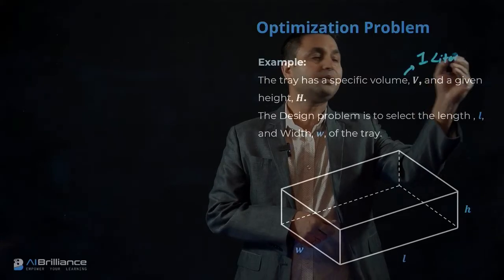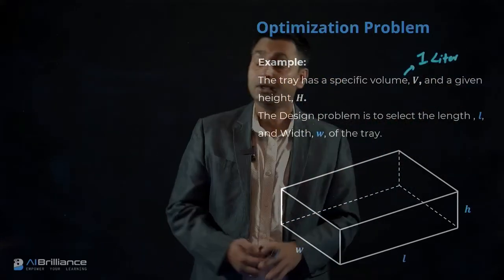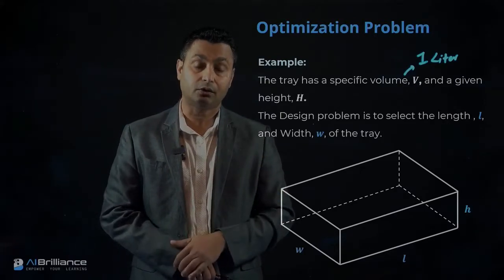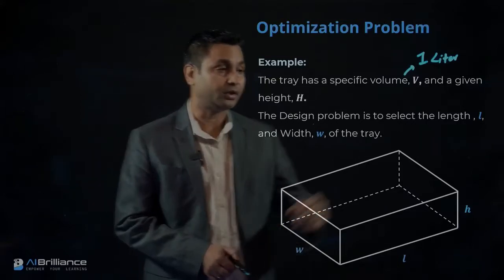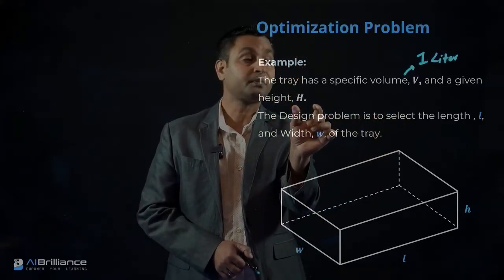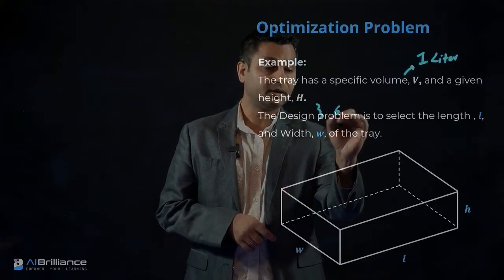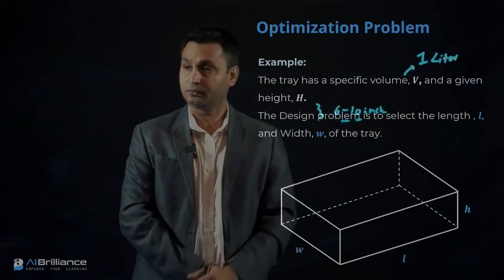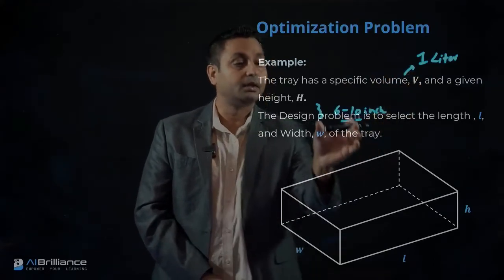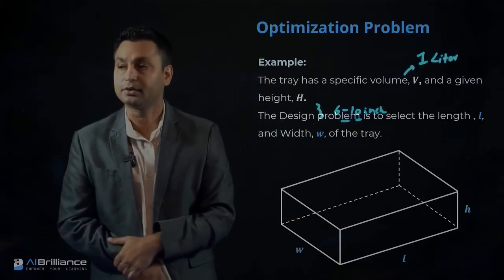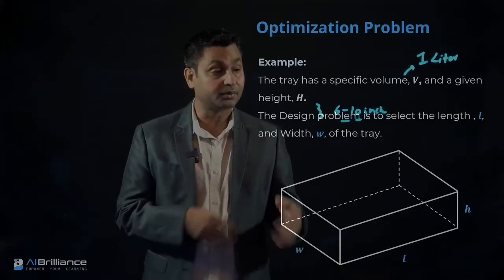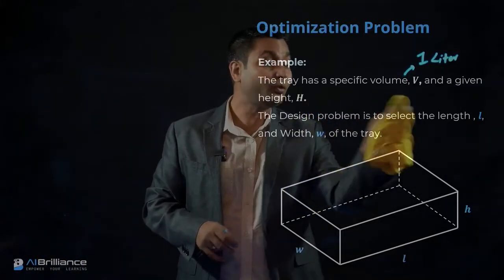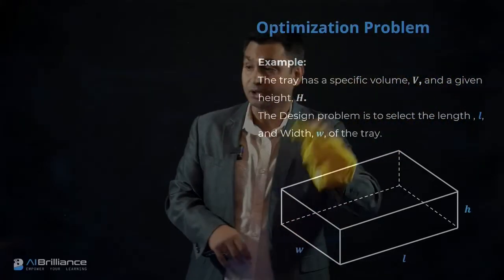Because of ergonomic constraints, the drawer must also have a very specific height H, which is also fixed — perhaps six or ten inches, set by the vendor. These two things — volume and height — cannot be changed. However, the carpenter has flexibility in choosing the length and width of the drawer.